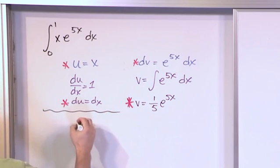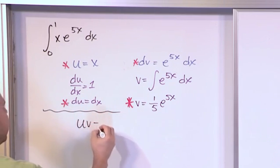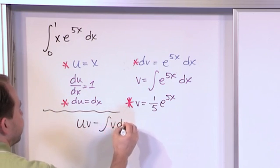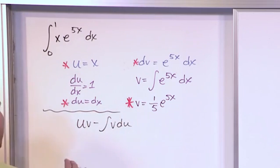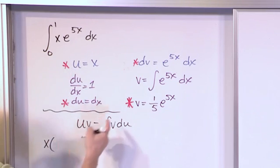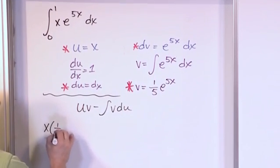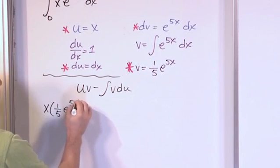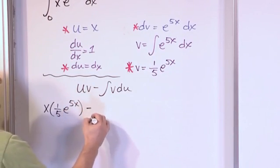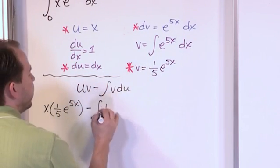Right? So integration by parts would be uv minus integral v du. Right? And so what we have is u is x, so we'll have x, v is one fifth e to the 5x, so that handles the u times v minus the integral of v right here, one fifth...